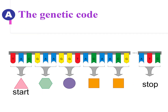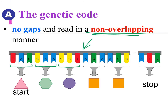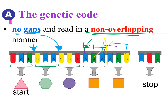For the triplet code, they are read in a group of three. We call this the non-overlapping manner of reading. And between each of the triplet codes there is no gap. Remember, the triplet code must be read in a non-overlapping manner — they must be read in a group of three without any gaps in between.